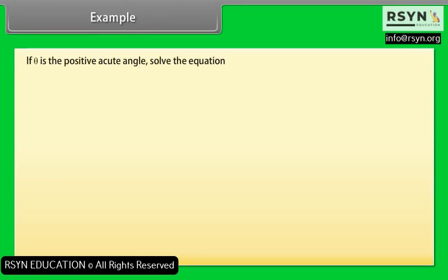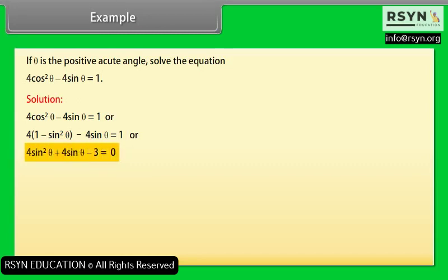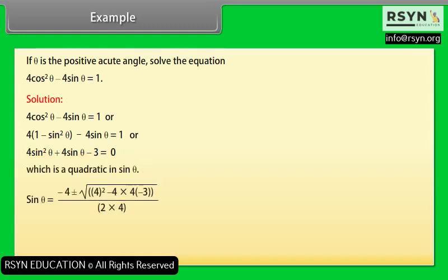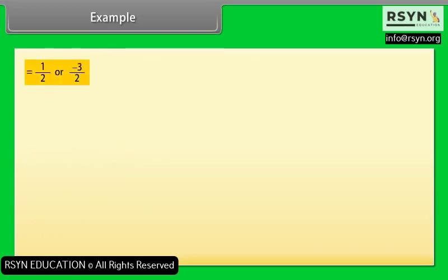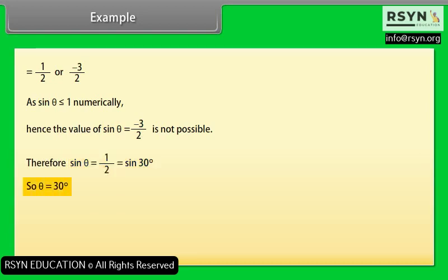Example: If θ is a positive acute angle, solve 4cos²θ − 4sin θ = 1. Substituting cos²θ = 1 − sin²θ: 4(1 − sin²θ) − 4sin θ = 1, giving 4sin²θ + 4sin θ − 3 = 0. Using the quadratic formula: sin θ = (−4 ± 8)/8, giving sin θ = 1/2 or −3/2. Since |sin θ| ≤ 1, sin θ = −3/2 is rejected. Therefore sin θ = 1/2 = sin 30°, so θ = 30°.